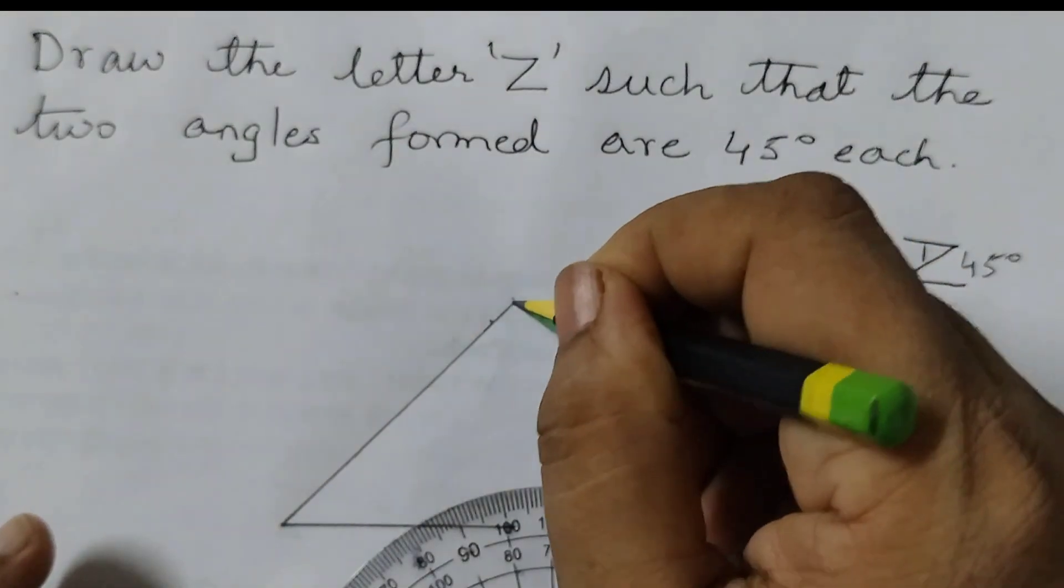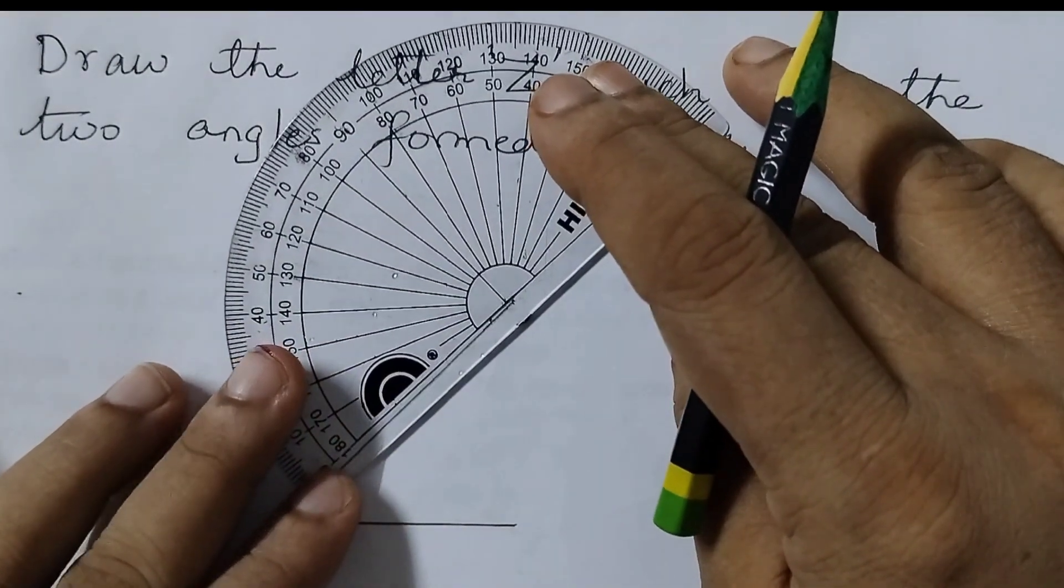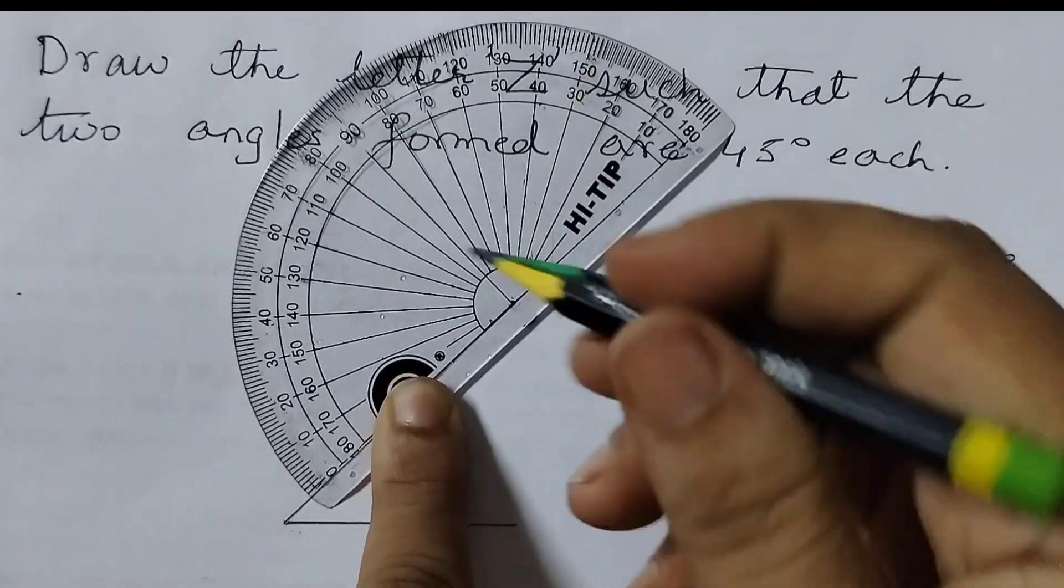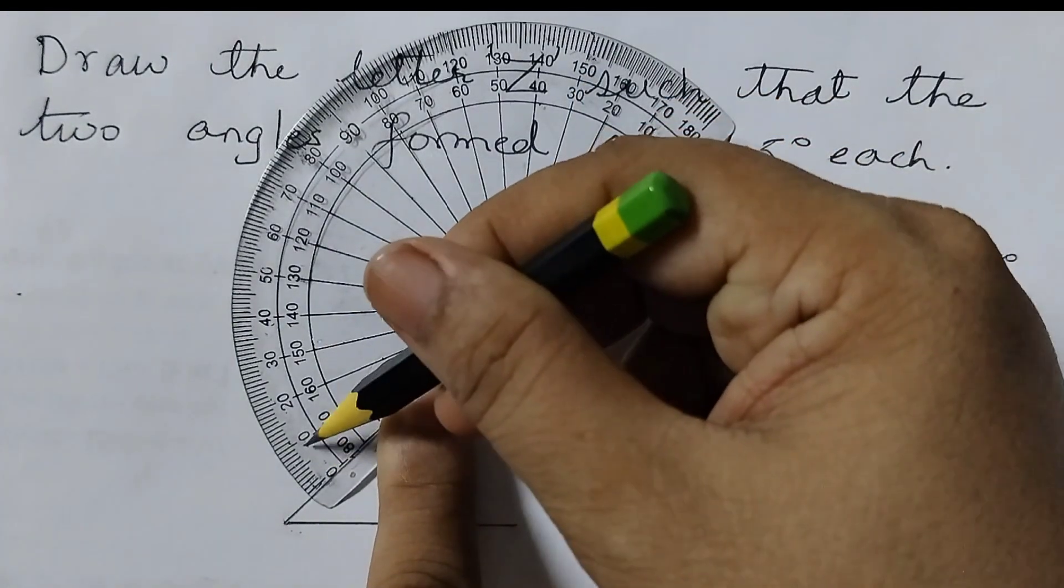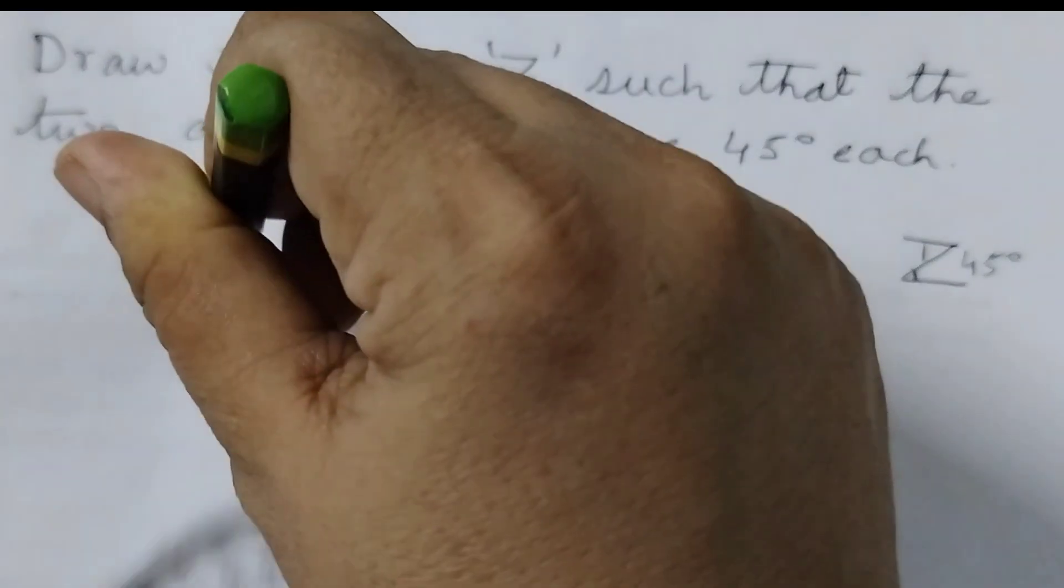Now I will place my protractor here. This point. The center. And I will draw a 45 degree angle. So place it like this. And now we will start from this side. 0, 10, 20, 30, 40, 45. This point here.